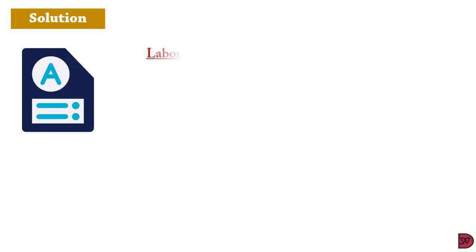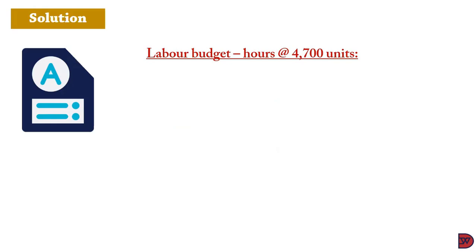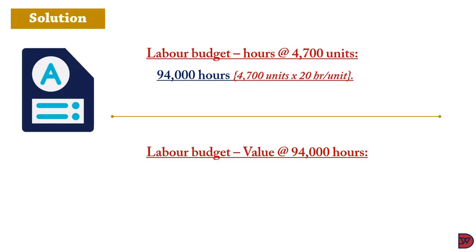For the labor budget: hours required = 4,700 units × 20 hours per unit = 94,000 hours. Labor cost = 94,000 hours × $5 per hour = $470,000.